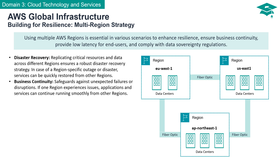Unforeseen disruptions can be catastrophic. With a multi-region strategy in place, you're well prepared to face the unknown. If one region faces issues or disruptions, your applications and services can seamlessly transition and continue running smoothly from unaffected regions. Your business stays in motion, regardless of the challenges that arise.